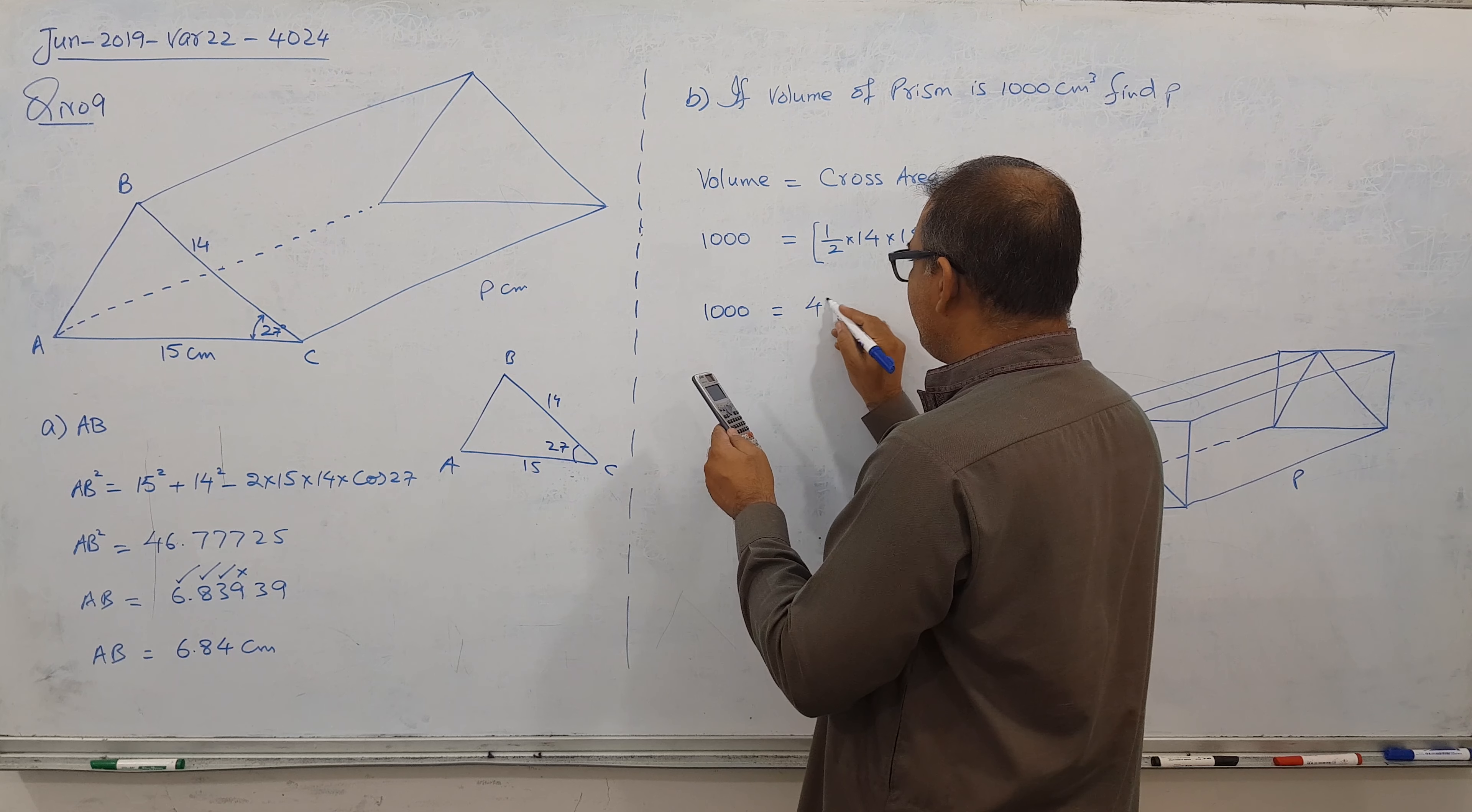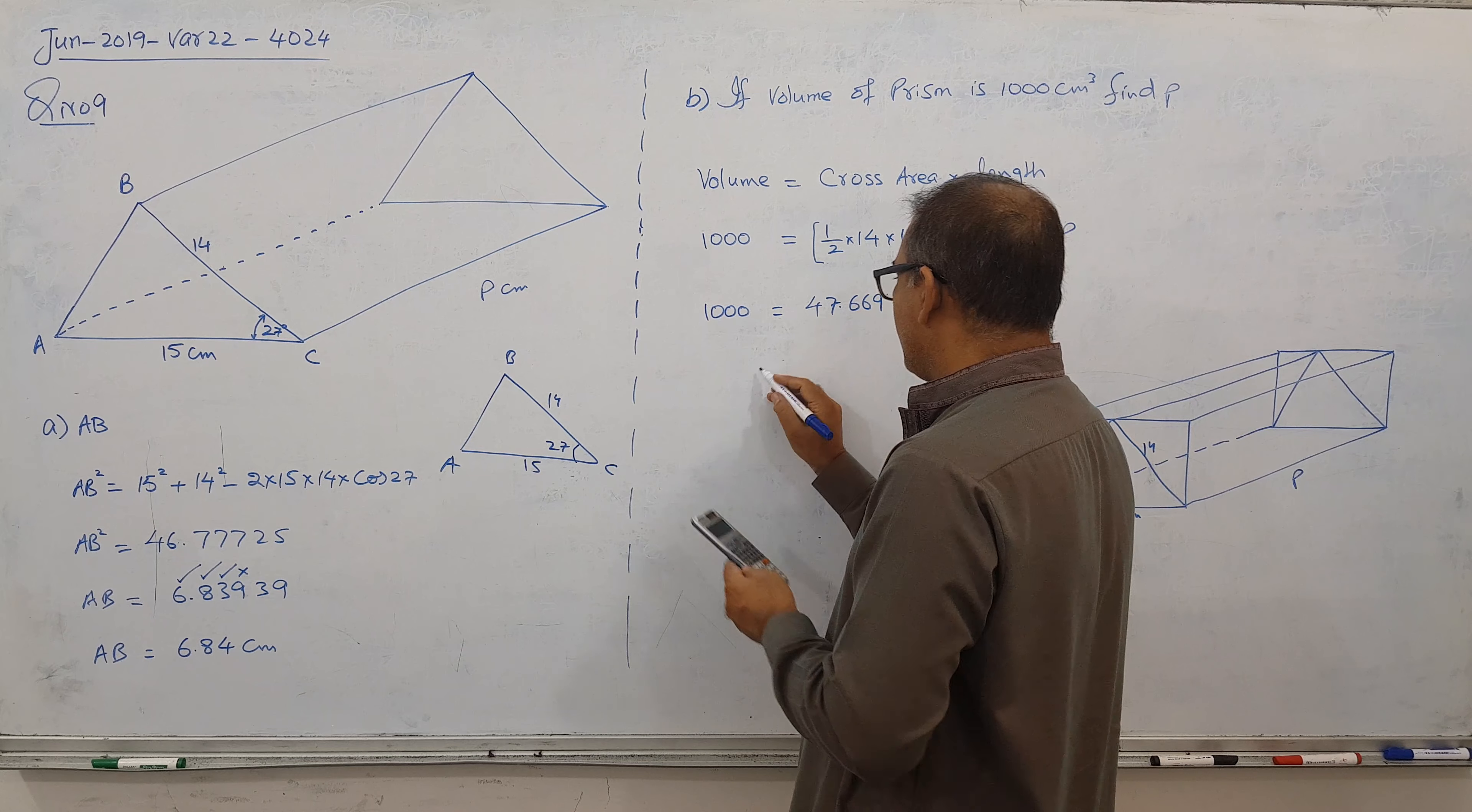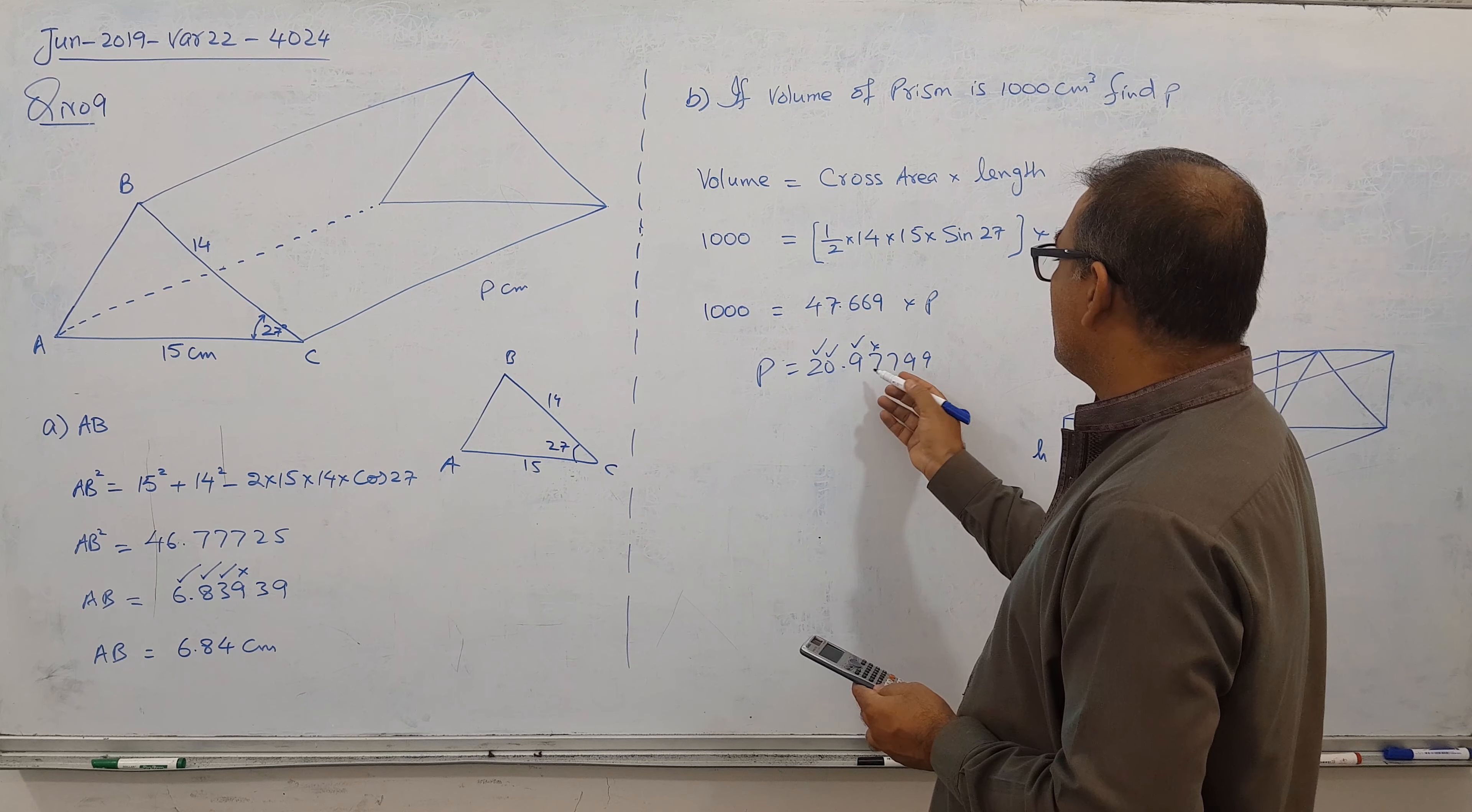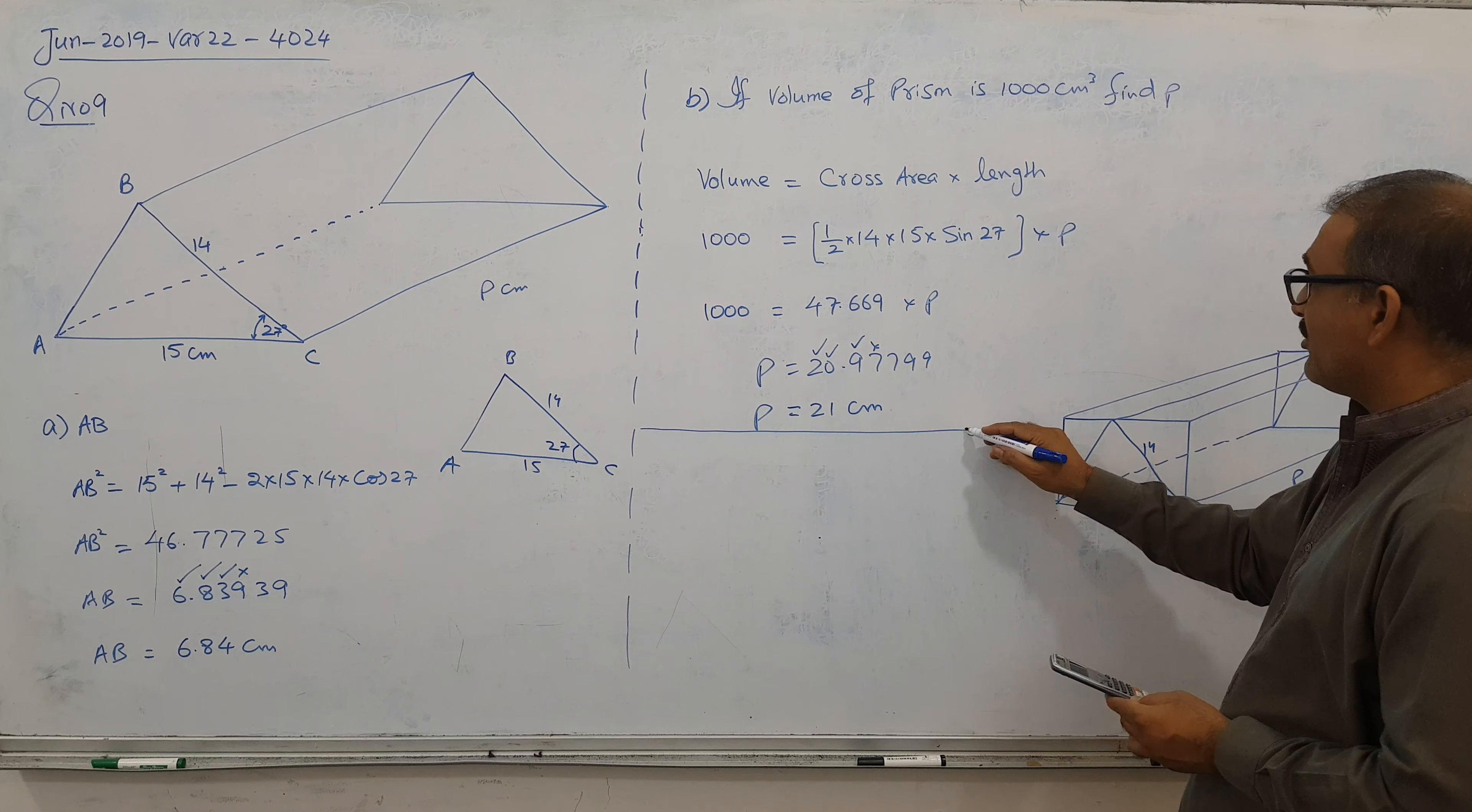So here's 1000. And this is coming 47.669. And then two zeros, no need to write it. And now it goes, 1000 divided by this value, it gives you 20.97799. But I need 3 significant figures. Again, sine comes, so the recurring is there. So if you round it here, this becomes 21 centimeters approximately.